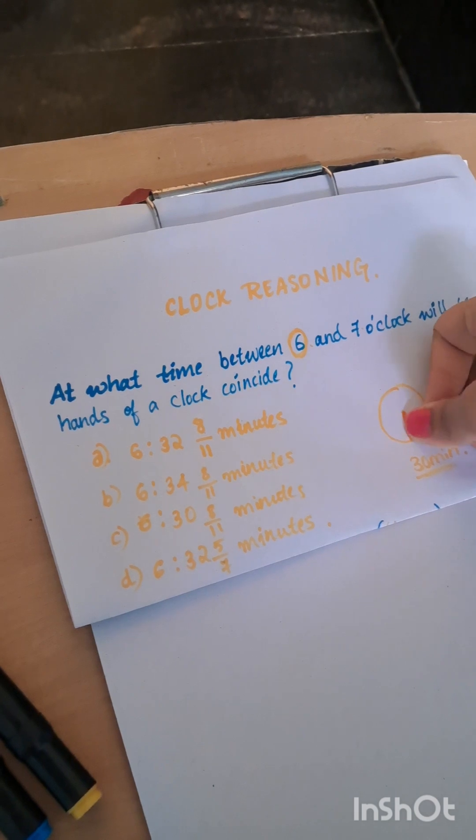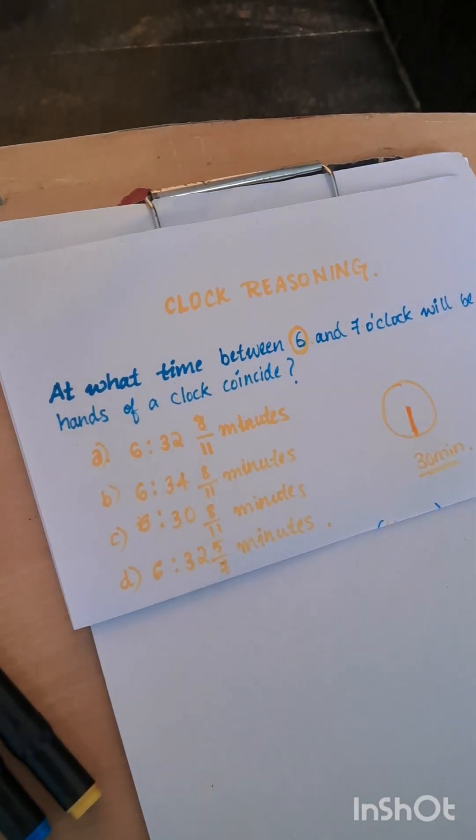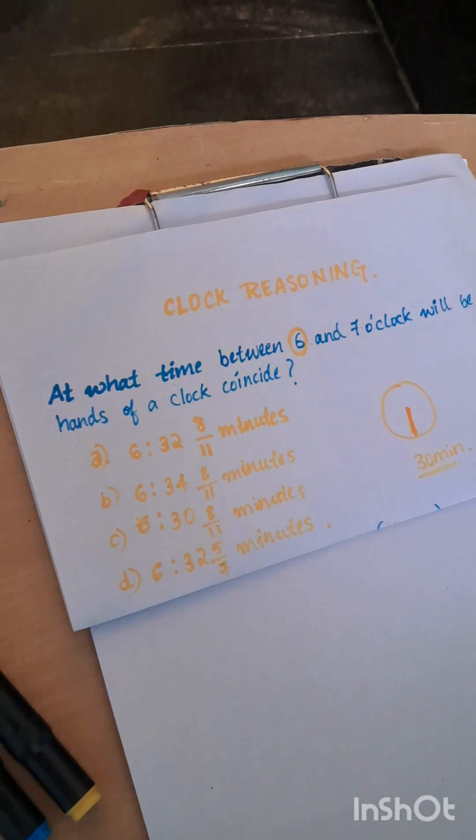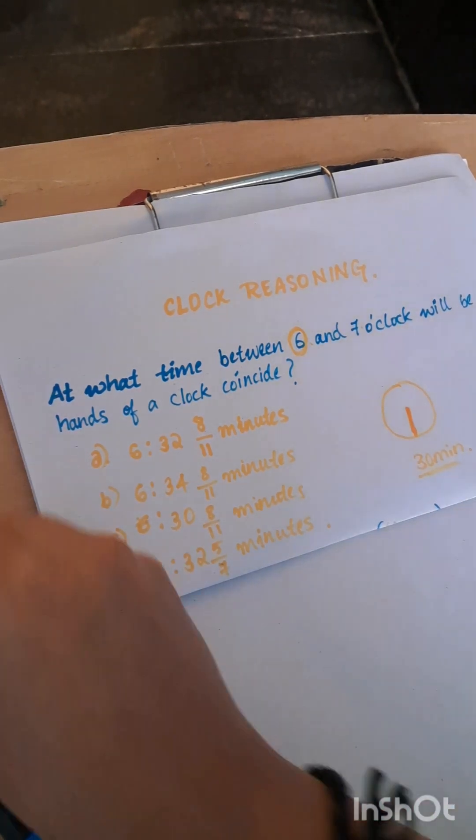If they ask between 7 and 8, it would be on 7, so it would be 35. Between 9 and 10, it would be 45. So that's how it works. Now let us try to solve the question in two ways.